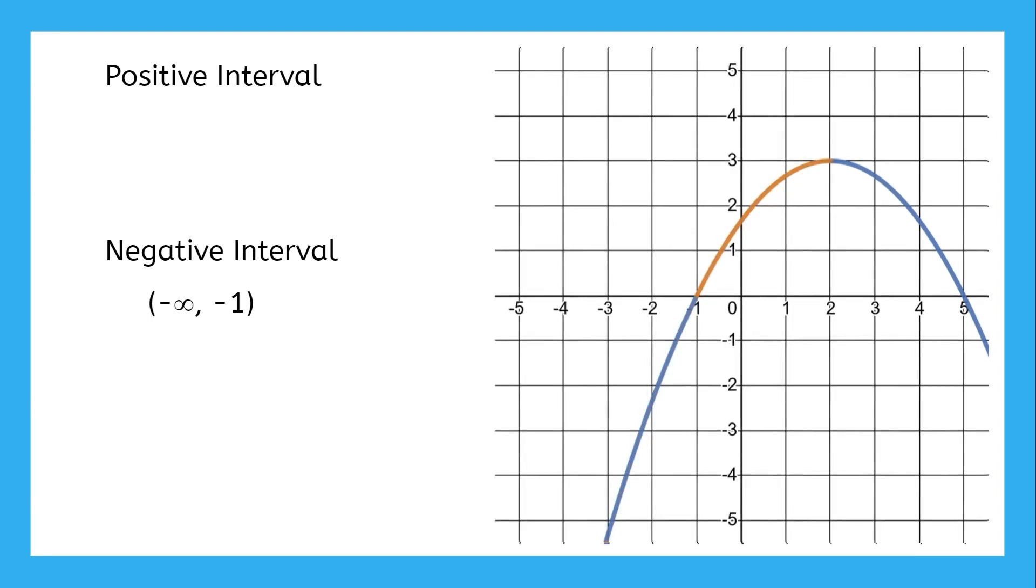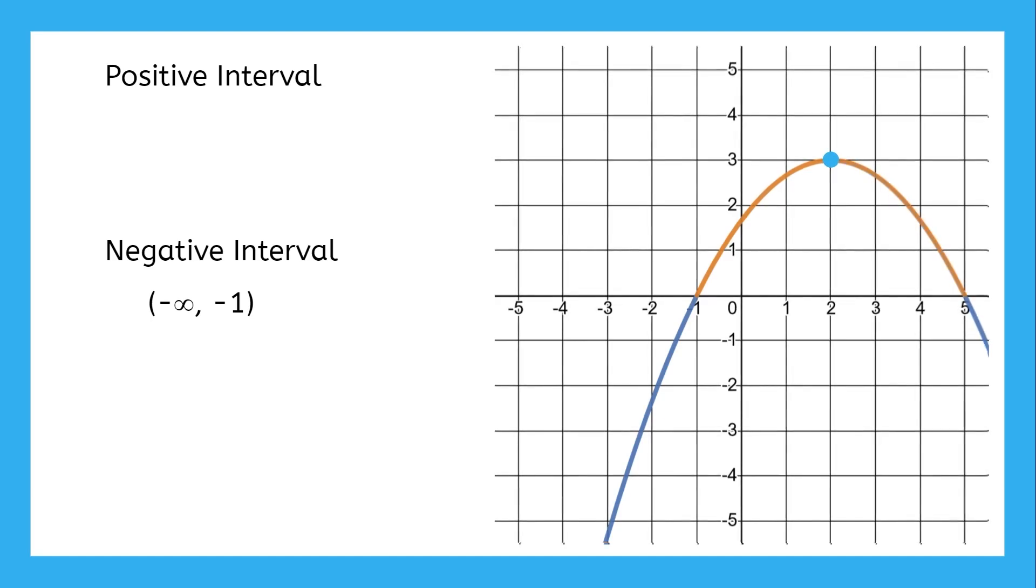After that, the graph goes positive, then hits a maximum and starts coming back down, still positive though, until it hits the horizontal axis again when the input is five.